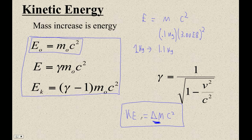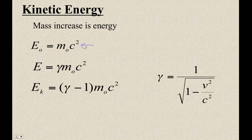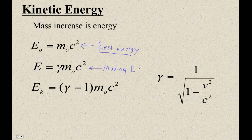Let me explain what these formulas are. This thing here is the rest energy — that's if you could convert the mass of the object into pure energy. Of course, that's E equals mc squared. This is the moving energy of the object — the total energy of matter and kinetic energy. So that's rest energy plus kinetic energy, right there.